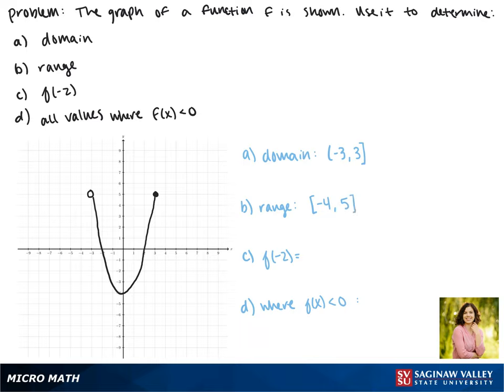So our range is negative 4 to 5. Now to find f of negative 2, we need to find where x equals negative 2 and figure out the y value. So here at this point, the y value is 0, so f of negative 2 equals 0.